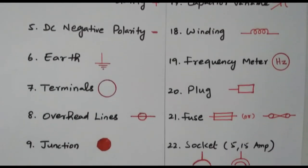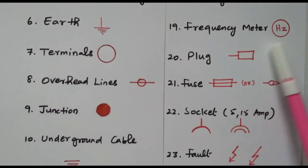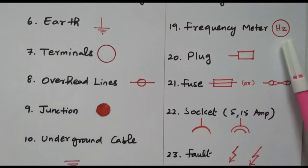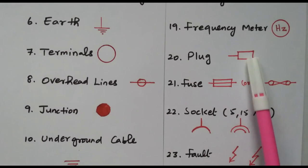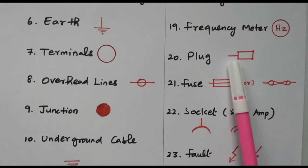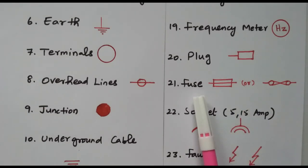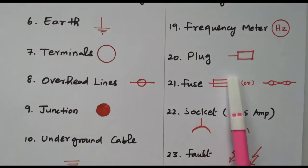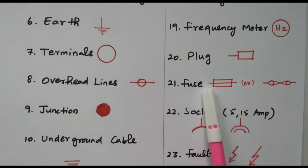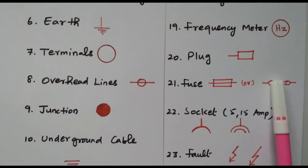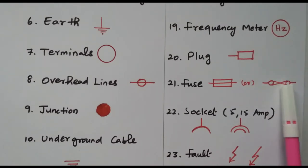Then the frequency meter is given within a circle with Hz, because the unit of frequency is hertz. The plug point has one box with a line on one side only. Then the fuse is represented by a wire over which a box is placed, meaning the conductor is going through a fuse. It can also be represented by two circles cross-multiplied.